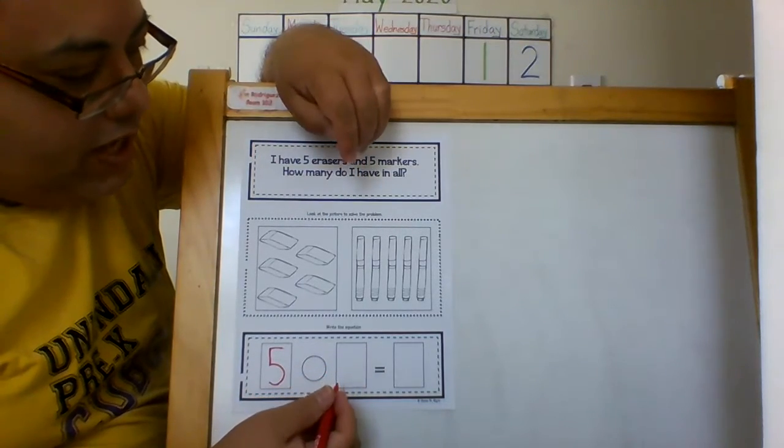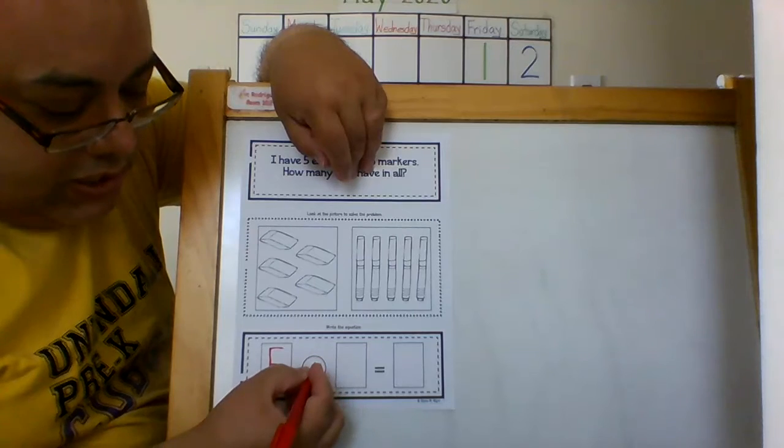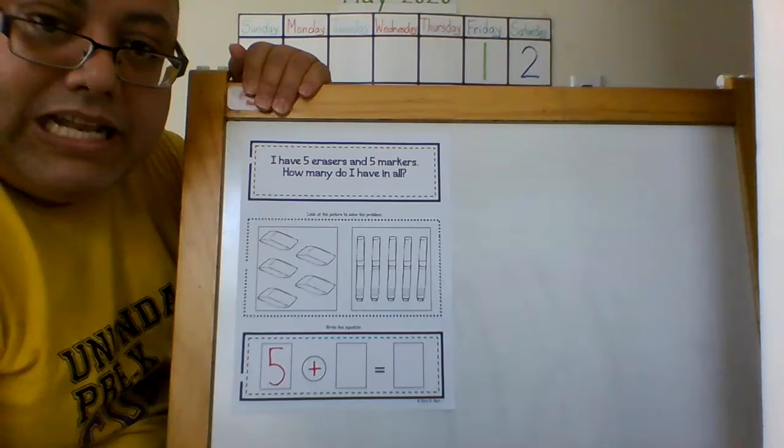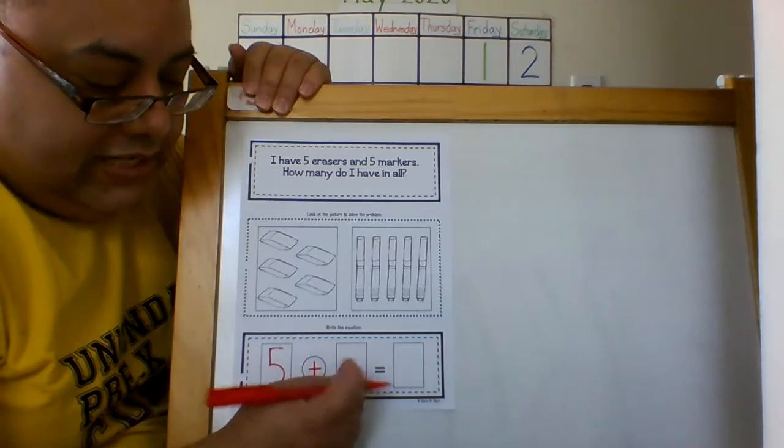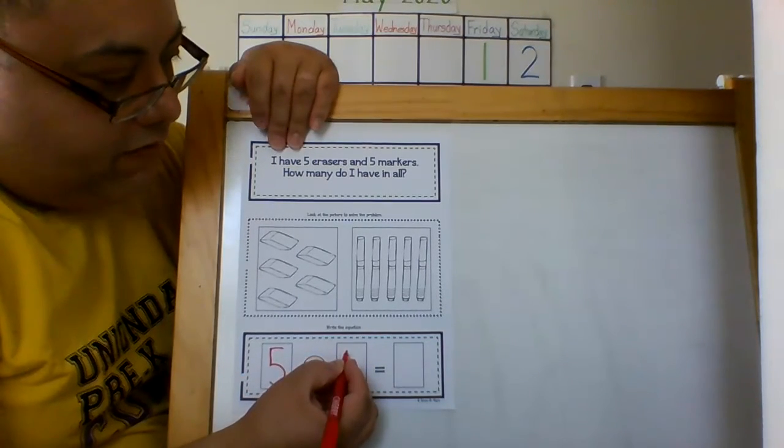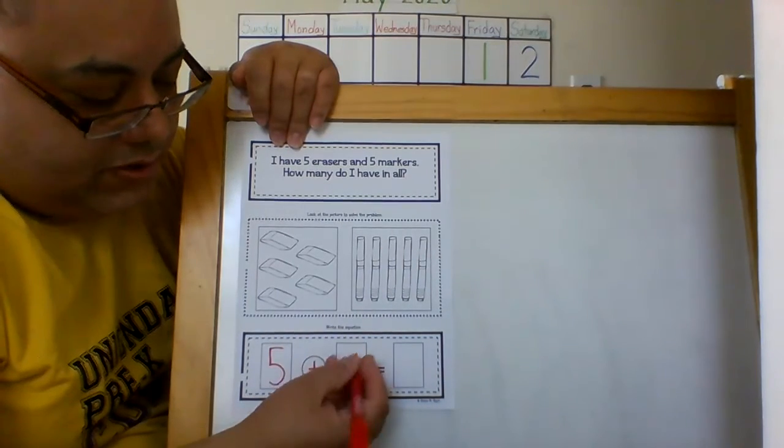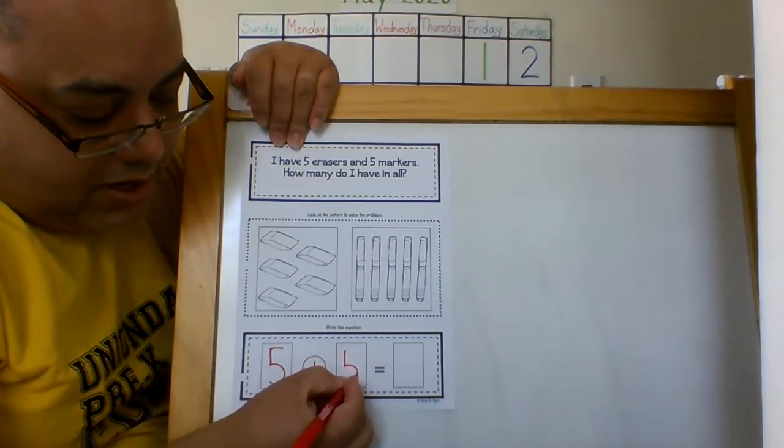Now it's how many do I have in all? So I need to put a plus sign like this in that little tiny circle. In this rectangle I'm going to write five erasers and five markers. So short neck, belly fat,